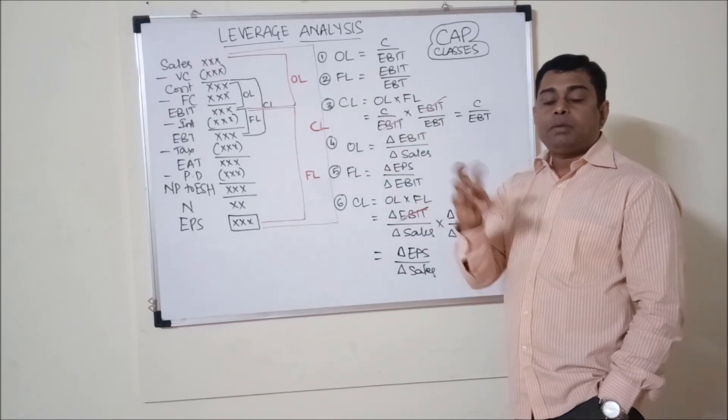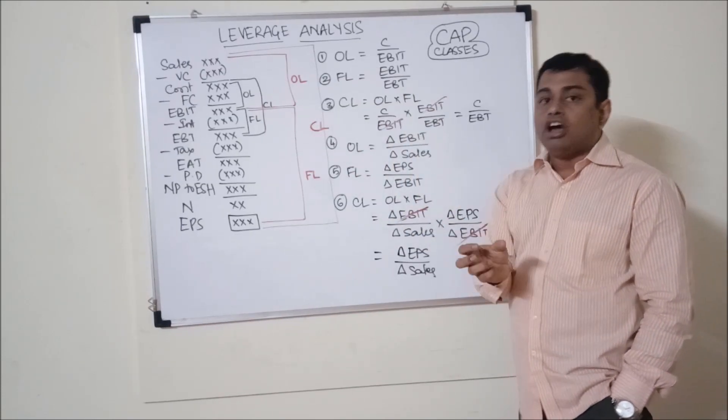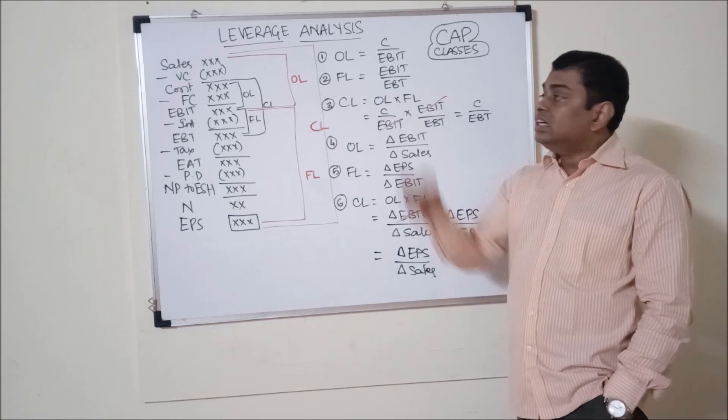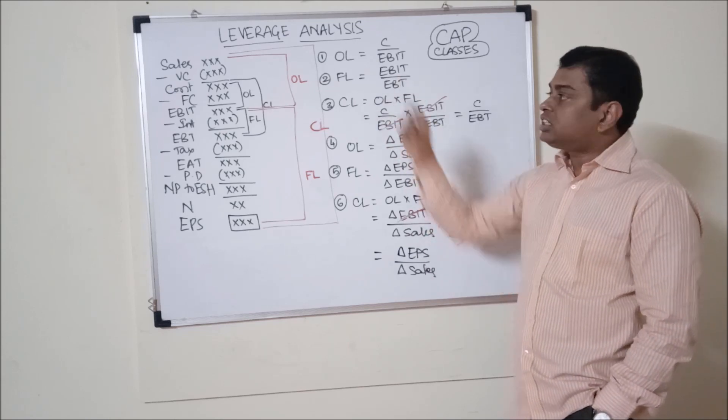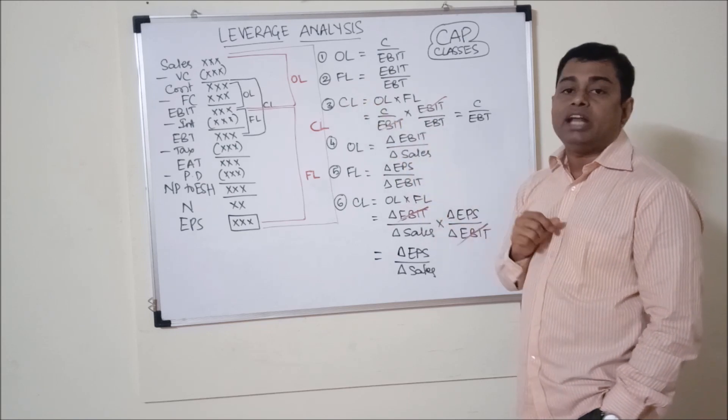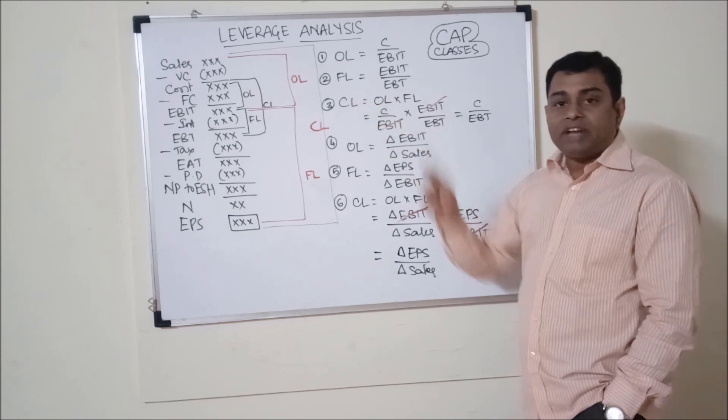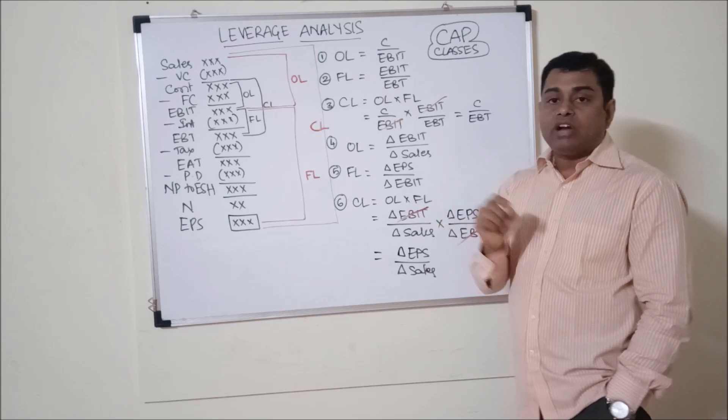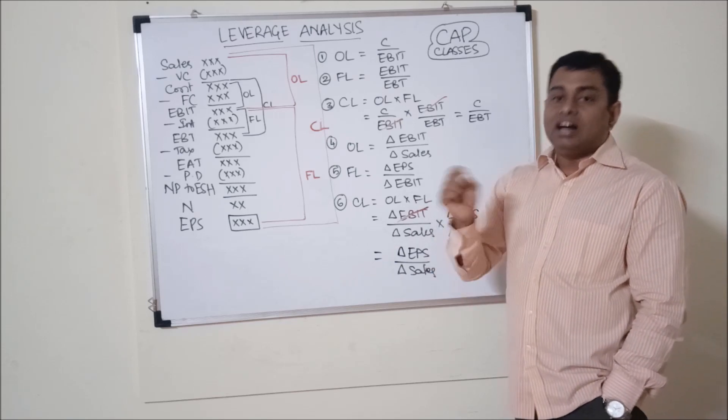First we consider statements as per marginal cost technique. We divide cost into variable cost and fixed cost. Sales minus variable cost is known as contribution. If you subtract fixed cost we will get operating profit, EBIT. From that subtract interest, we will get earnings before tax. Subtract tax, we will get earnings after tax.